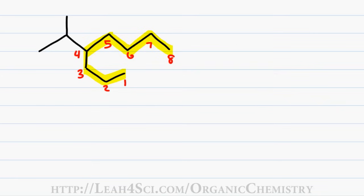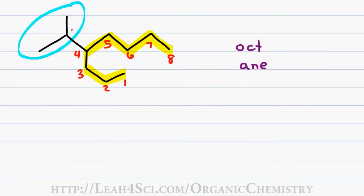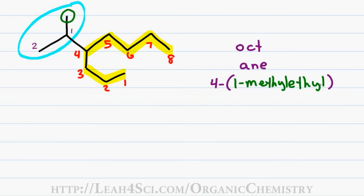Having 8 carbons in my parent chain gives me a first name of 'Oct' and only single bonds gives a last name of 'ane.' Once again, we find a branched chain substituent. We number the carbon coming off the parent chain as 1 and the next as 2. With 2 carbons in my substituent chain, this gives me an ethyl, but coming off the first carbon I have a methyl group, giving me a 1-methylethyl. The entire substituent comes off carbon 4, giving a final name of 4-(1-methylethyl)octane.